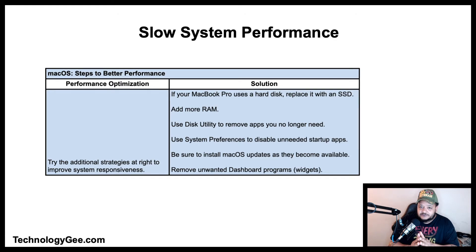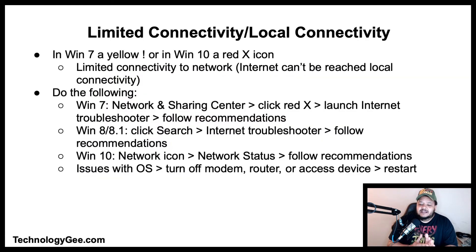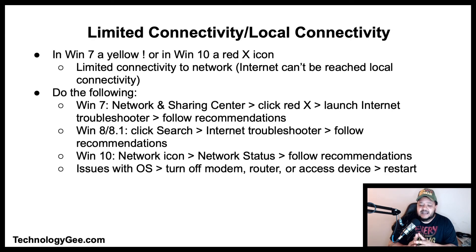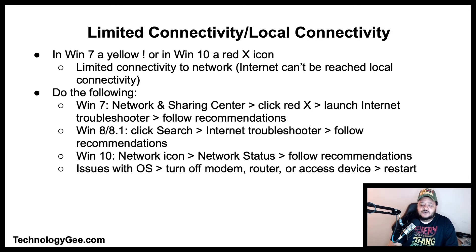Let's talk about limited connectivity and local connectivity. In Windows 7, if you see a yellow exclamation point symbol, or in Windows 10 if you see a red X icon next to the network icon in the taskbar, that indicates limited connectivity to the network, meaning that the internet cannot be reached. This is also known as local connectivity.